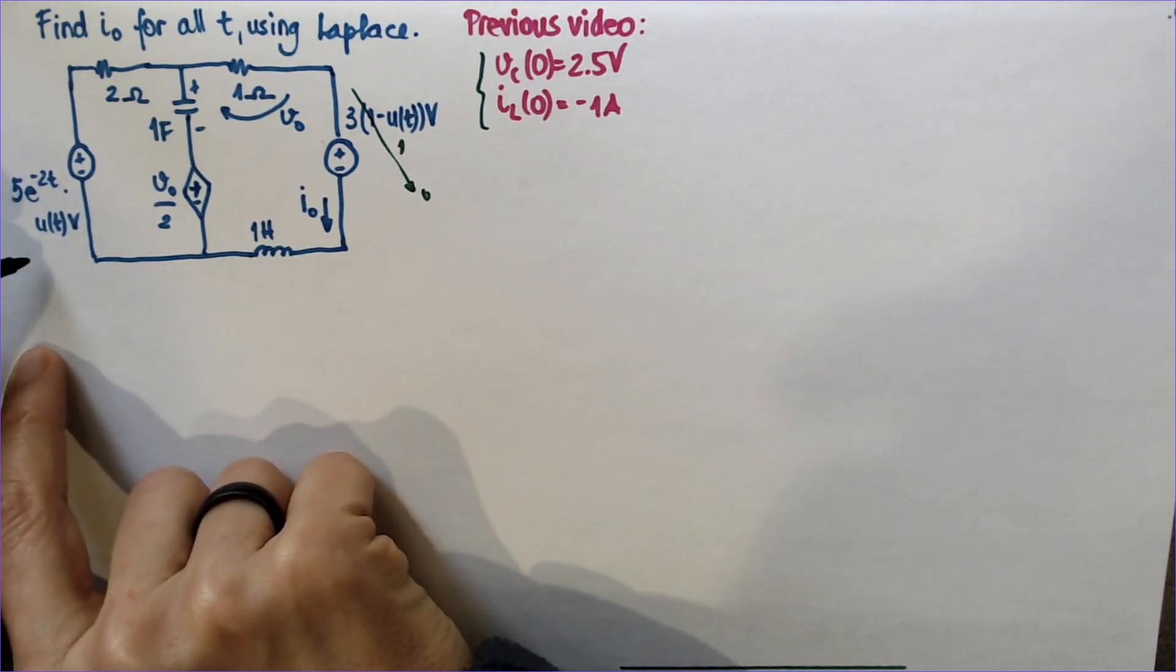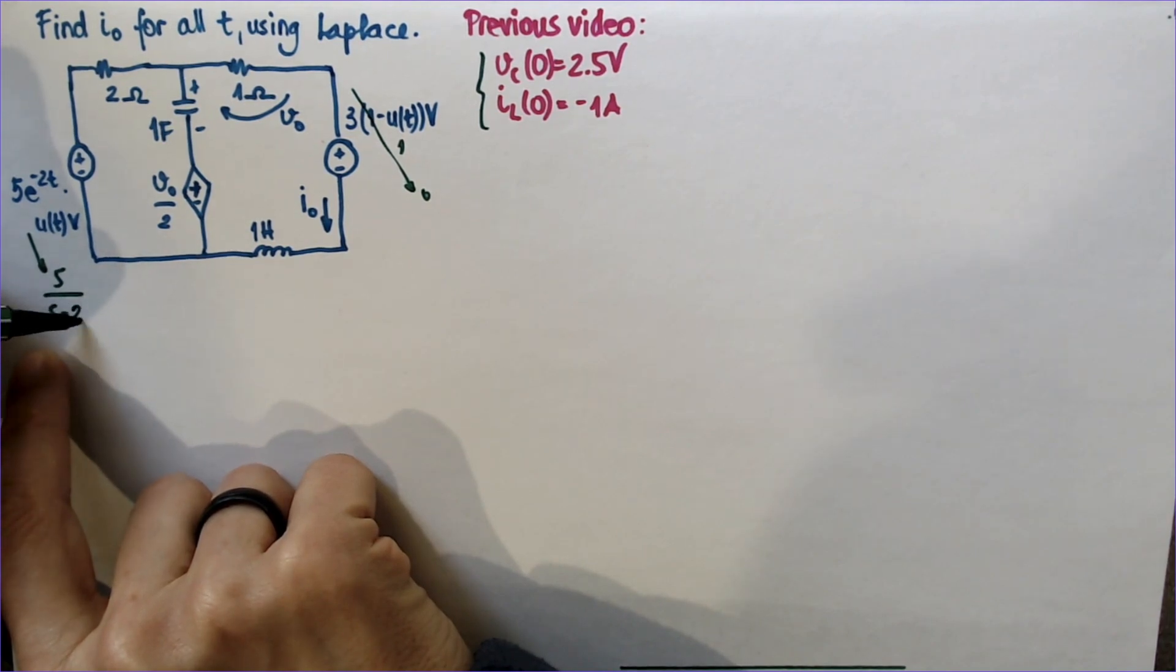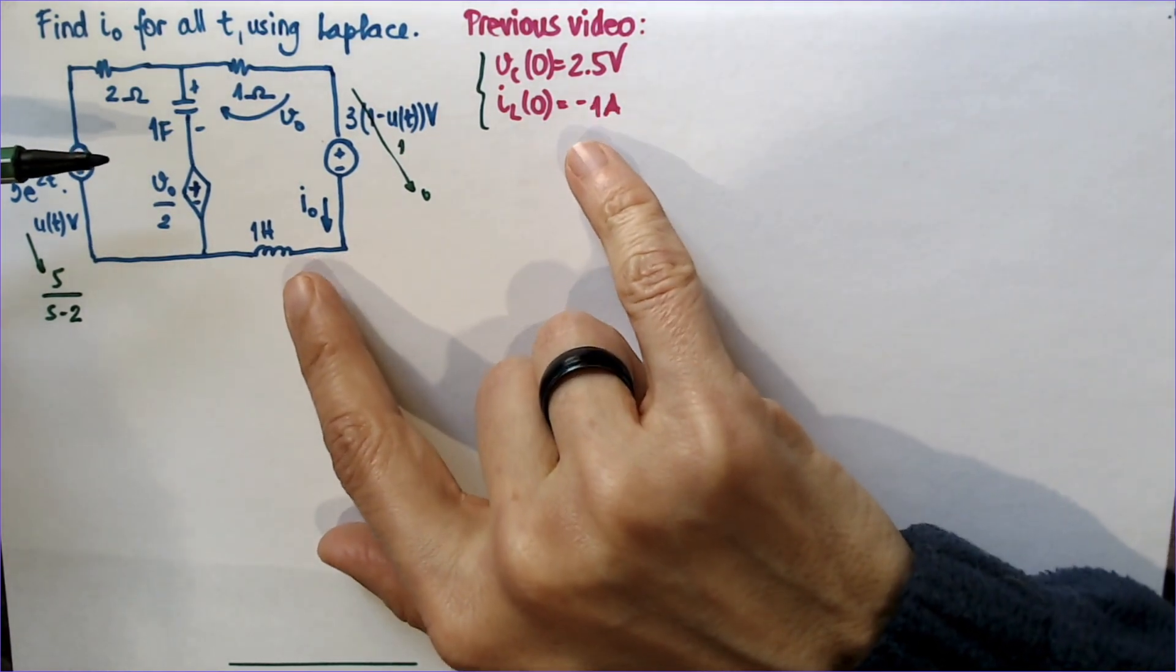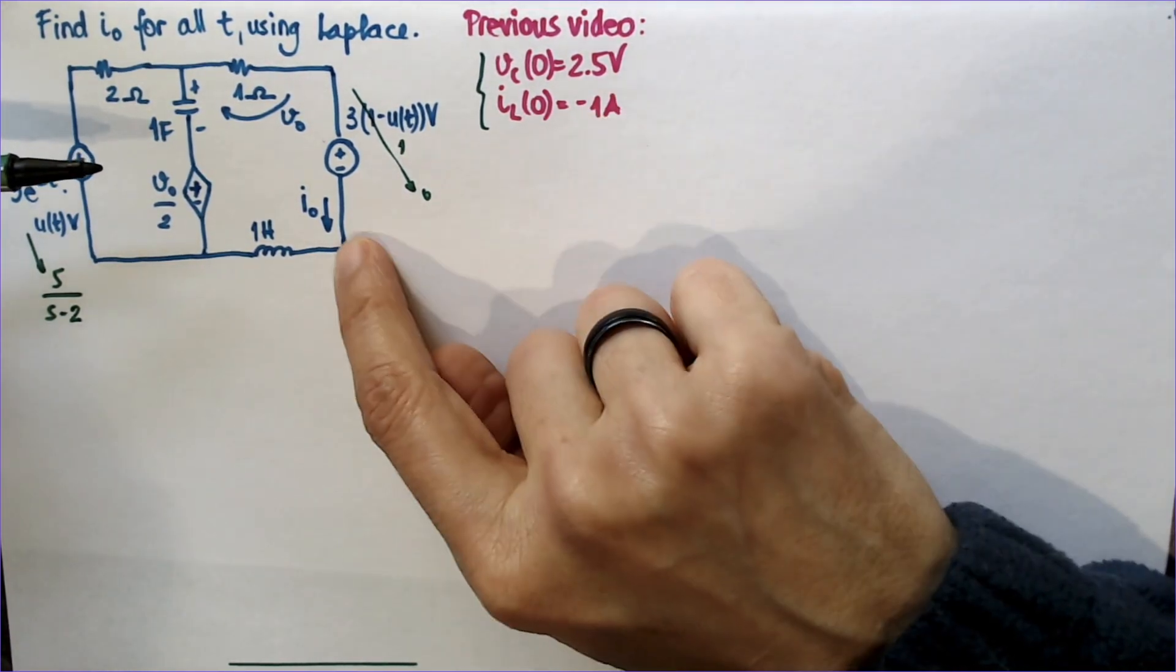We're going to draw this circuit in time domain. So the Laplace transform for this is going to be 5 over s minus 2. And then we're going to use the initial conditions to add to the circuit.